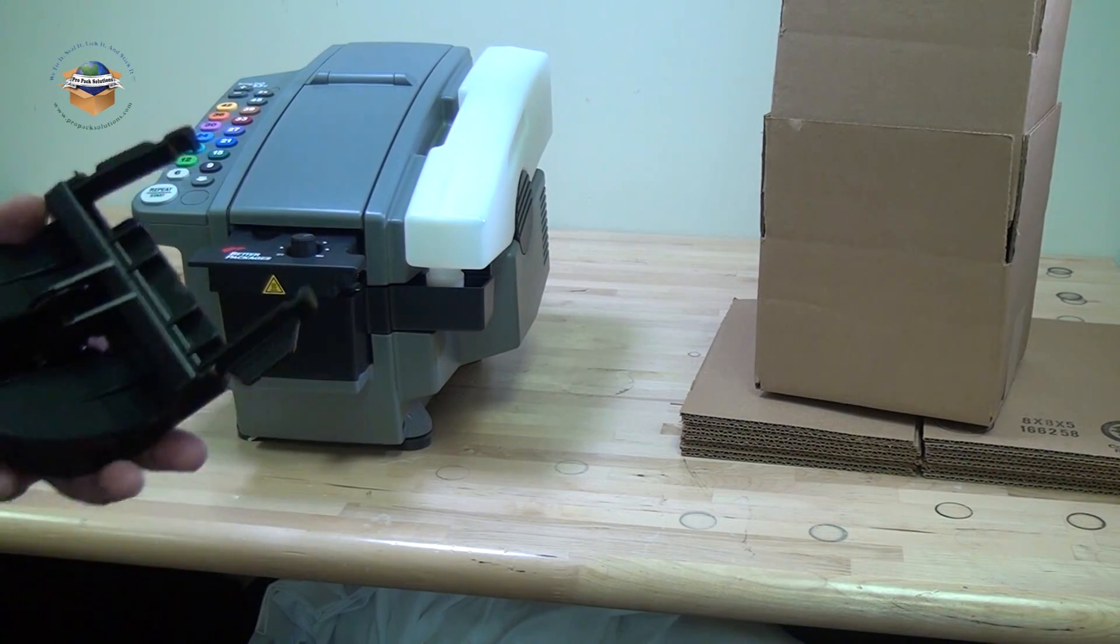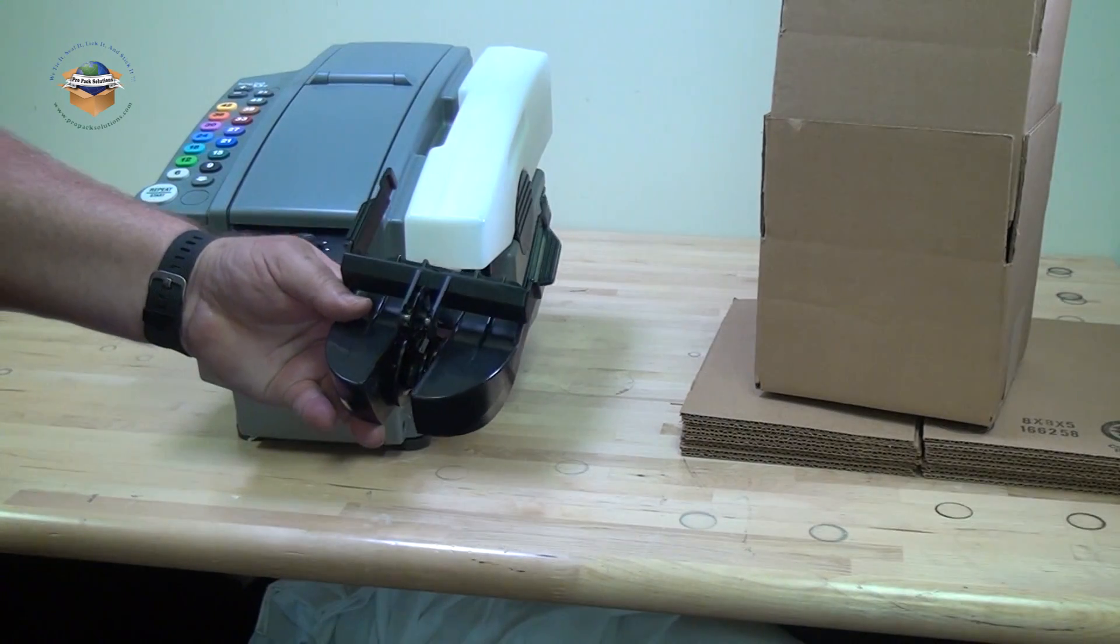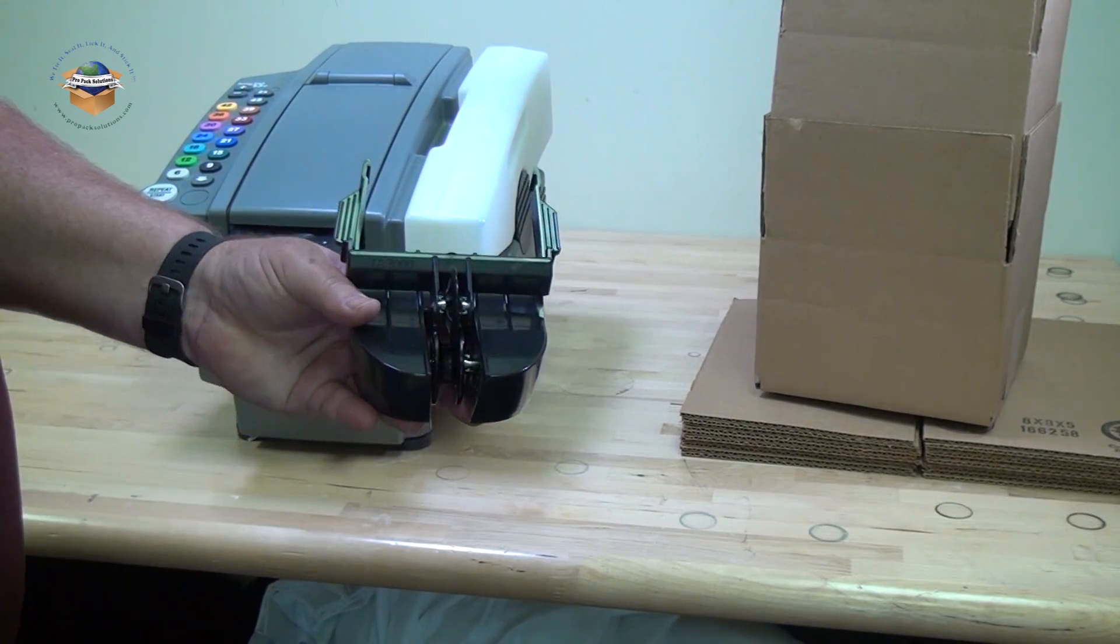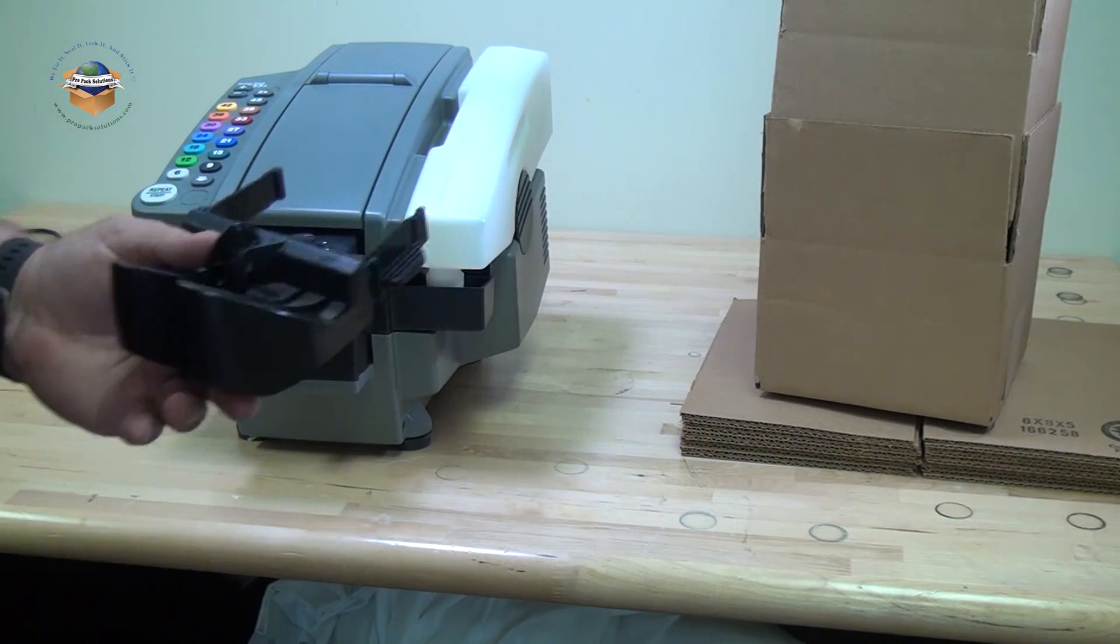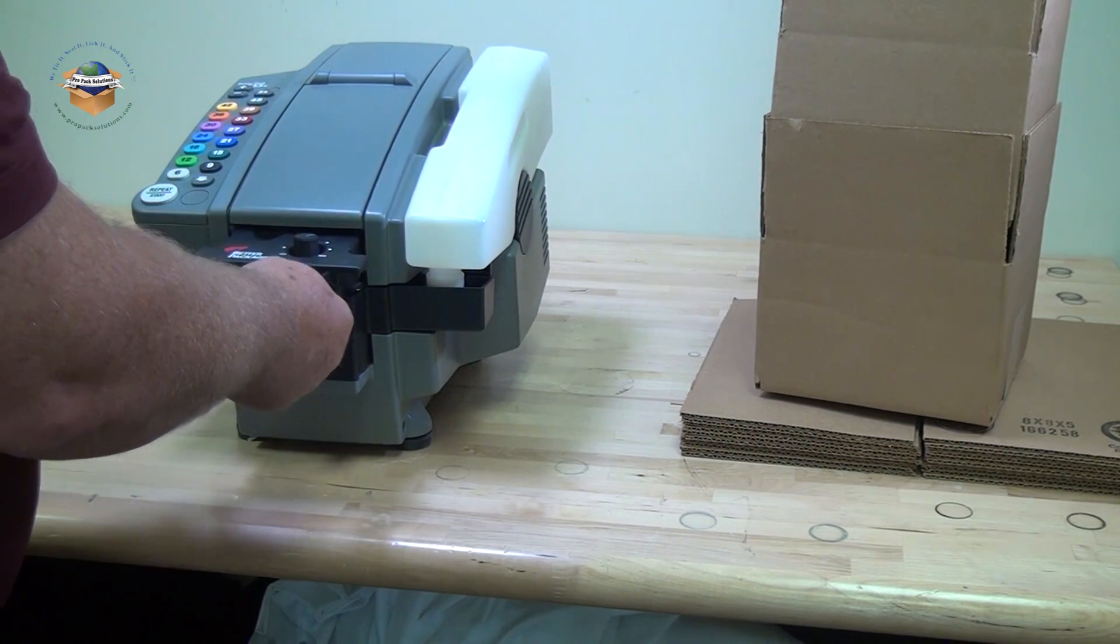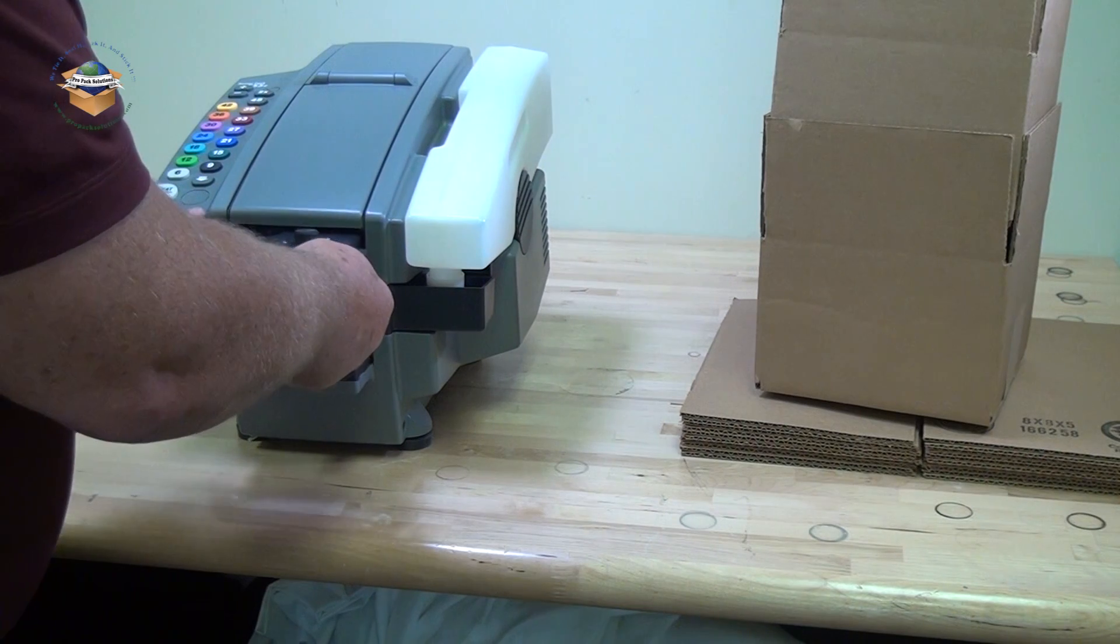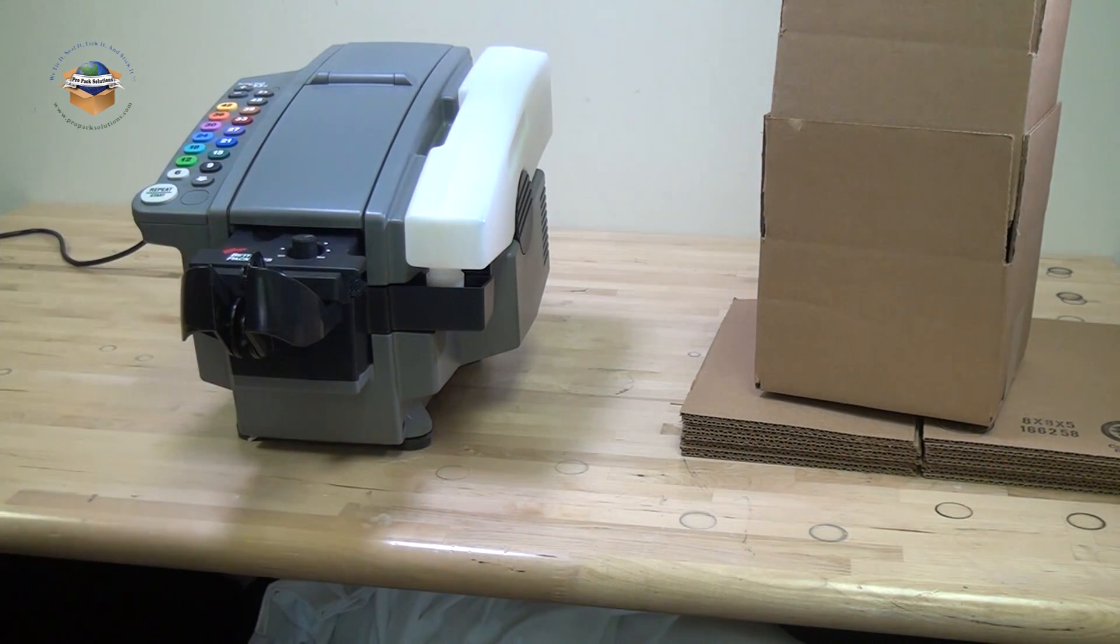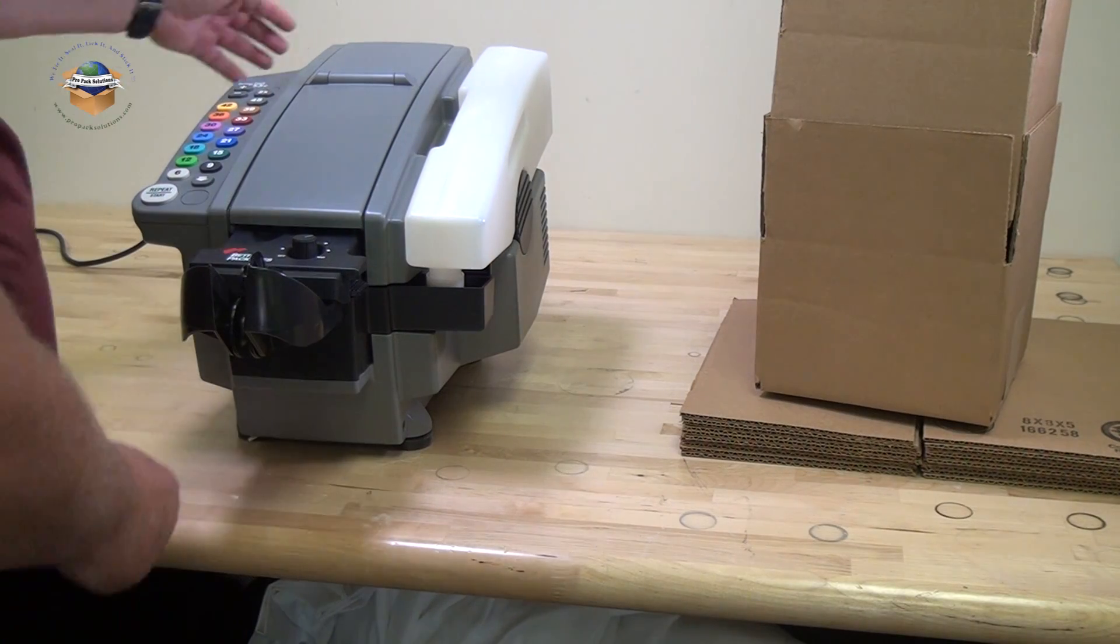Better Packages offers several options for the Better Pack 555. This is the tape aerial. What this will do is put a crease down the tape in the center and shoot it over a box. It snaps on the front. And now you can use your tape machine sideways.